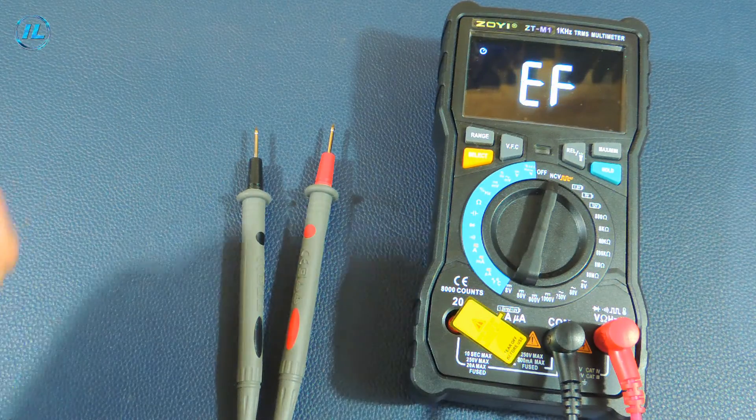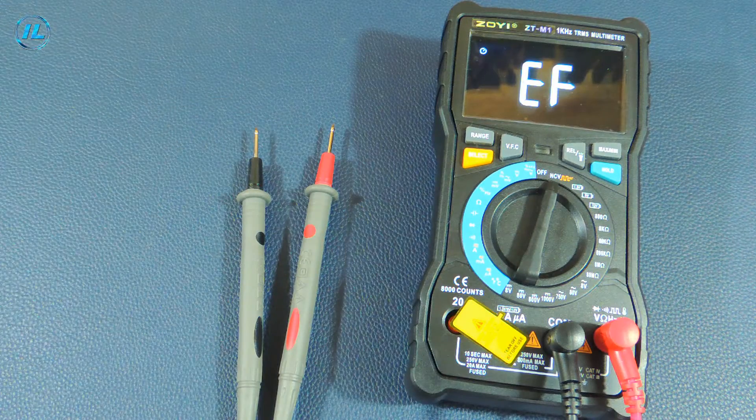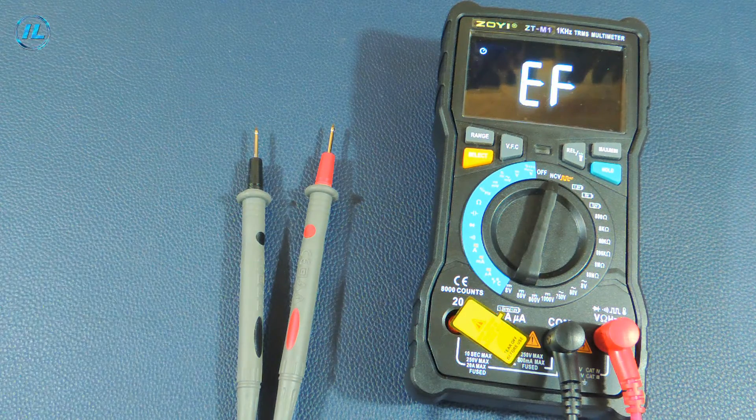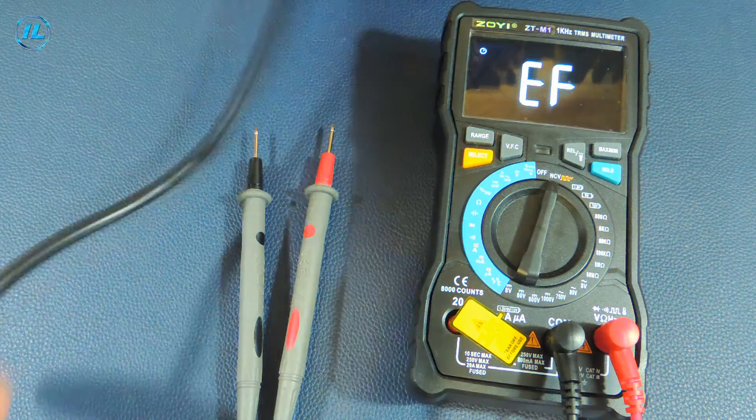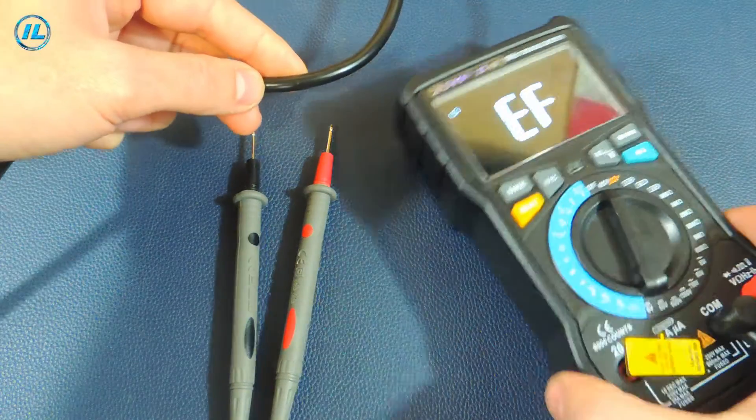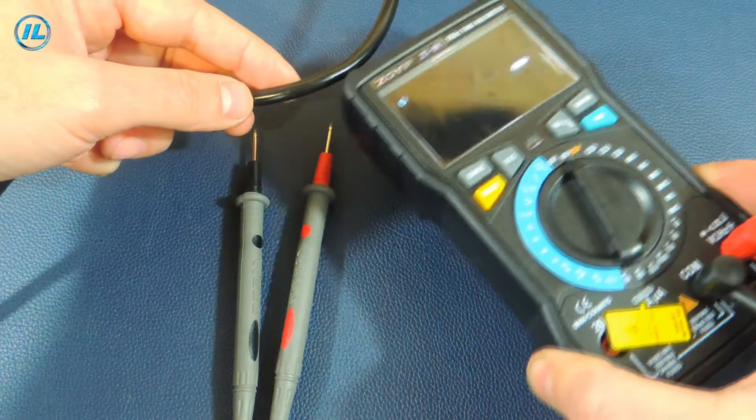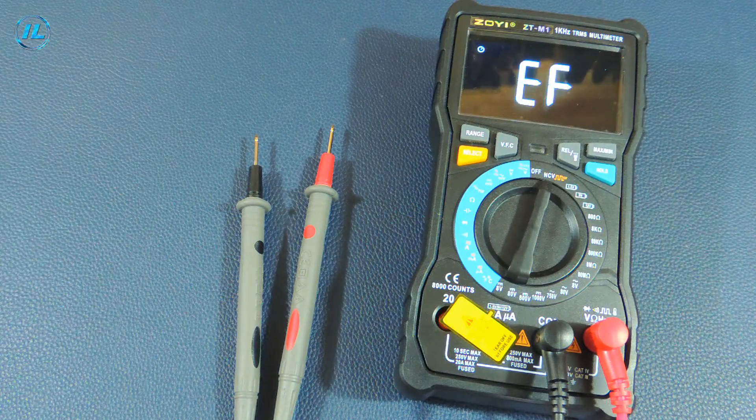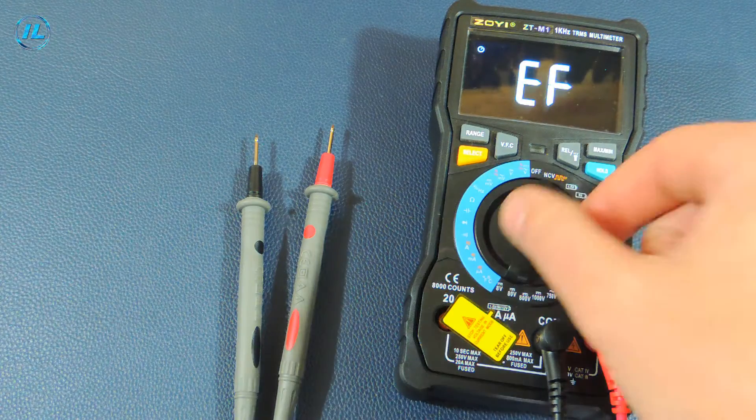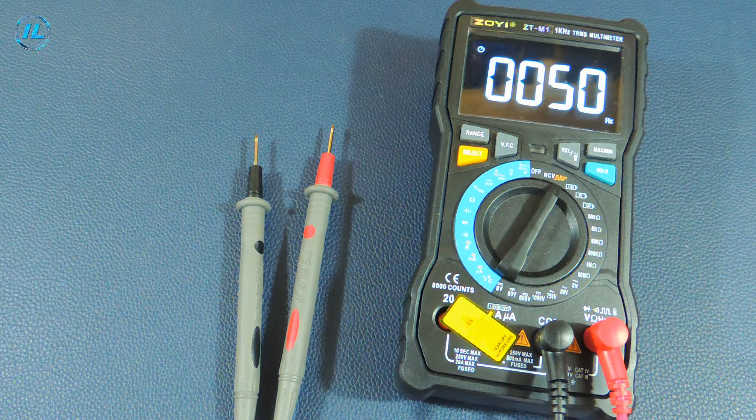The multimeter loads very quickly. The first point is NCV, that is, the detection of an electric field. It's a live wire. The electric field detection function works very well.